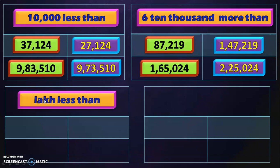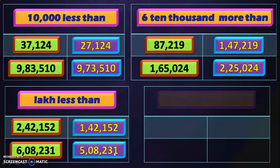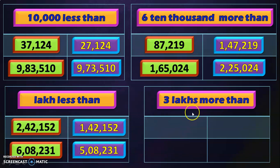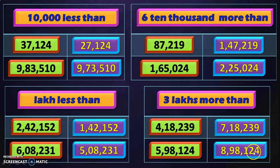Now we have to do lakh less than and more than the given number. For 1 lakh less than 2,42,152: we reach the lakhs place which has 2 and subtract 1, giving 1,42,152. Next, 1 lakh less than 6,08,231 is 5,08,231. The last sums: 3 lakhs more than 4,18,239 is 7,18,239, and 3 lakhs more than 5,98,124 is 8,98,124.